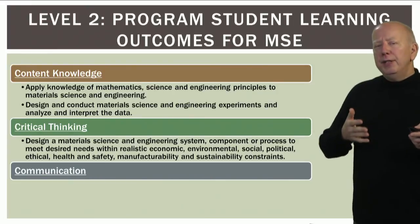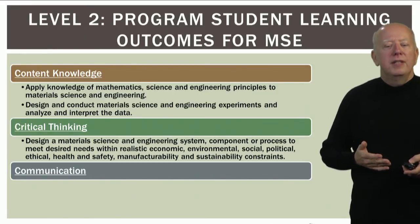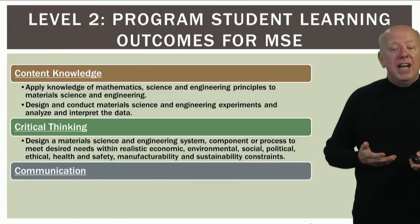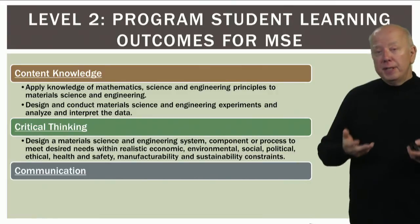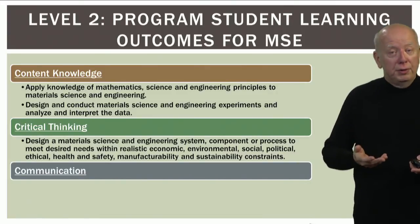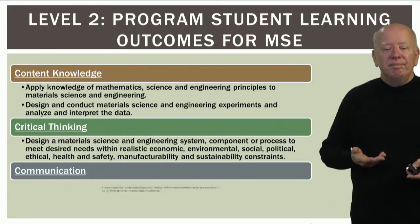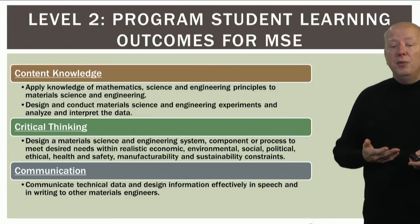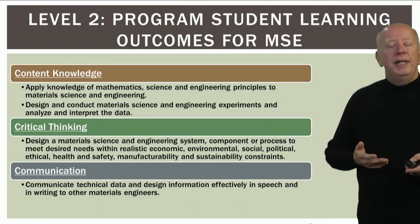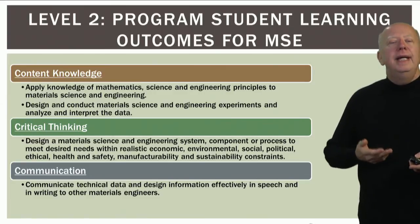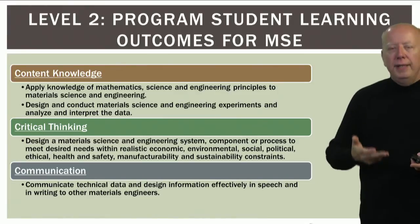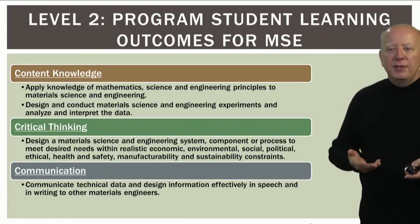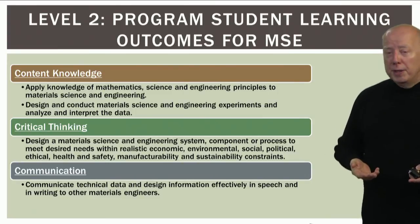For critical thinking, they ask students to 'design a material science and engineering system, component, or process to meet desired needs within realistic economic, environmental, social, political, ethical, health and safety, manufacturability, and sustainability constraints' — a very specific outcome with a very specific measurable component. For communication, 'they communicate technical data and design information effectively in speech and writing to other materials engineers.' This outcome is measurable because the communication is in writing and speech, so they can assess writing and presentations to other materials science engineers.